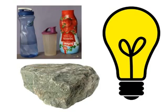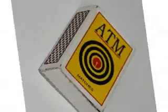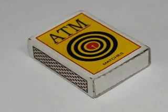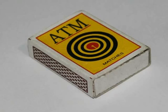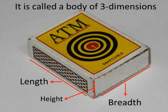Let us consider a piece of matchbox. It has a shape which has polygons, i.e., regular features on it. It has extension in three directions — length, breadth, and height — and hence it is called a body of three dimensions. A matchbox is an example of a cuboid.